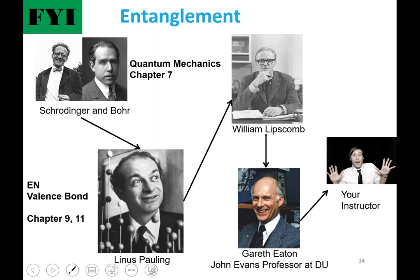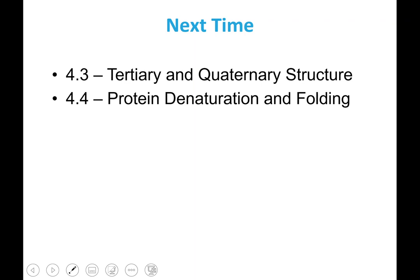I also bring this up to show how quickly knowledge can be erased in just one step in this chain. Next lecture we'll finish chapter four talking about tertiary structure primarily, and then some examples of quaternary structure. The final section details protein denaturing and protein folding.